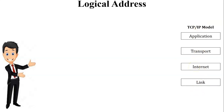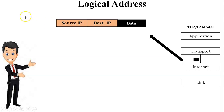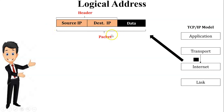Let us see one example using the TCP/IP model. When data transfers from the transport layer to the internet layer, the segment is converted into a packet. Inside the packet there is data which also includes the application and transport layer headers. At the internet layer, one more header is added containing the source IP and destination IP. This whole structure is called a packet at the network layer.